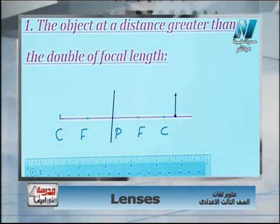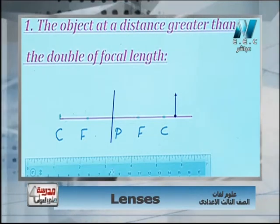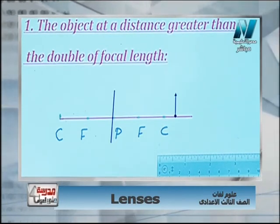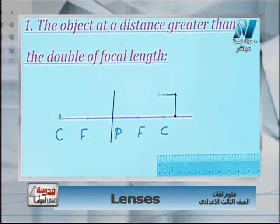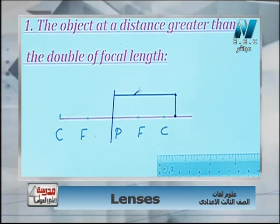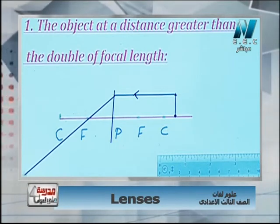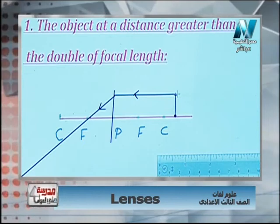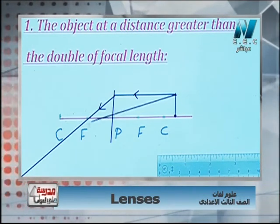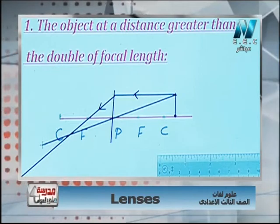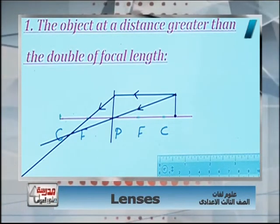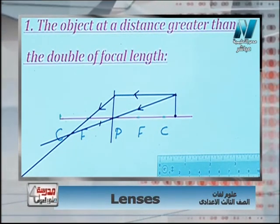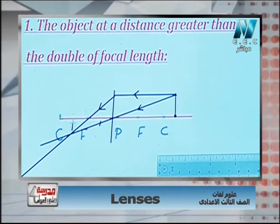Using rule number two, we draw a light ray parallel to the principal axis; this light ray refracts through the focus. Using rule number one, another light ray passes through the optical center and continues without refraction. The intersection of these two refracted light rays gives us the image position.